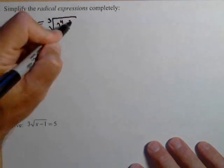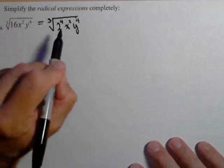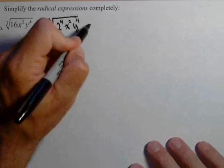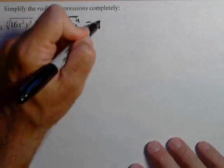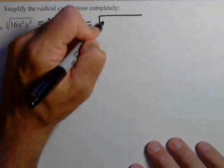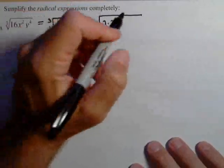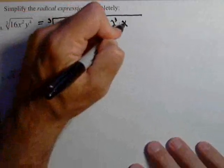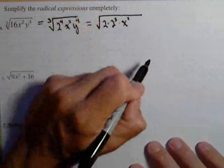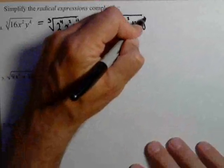x² y to the fourth. What we need are perfect cubes to see if we can pull out of this cube root. So let's rewrite it that way. By properties of exponents, 2 to the fourth I can write as 2 times 2 cubed. x² doesn't have any perfect cubes in it, so we'll leave it alone.